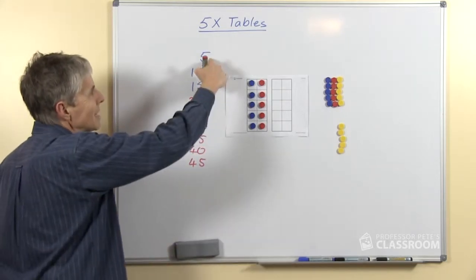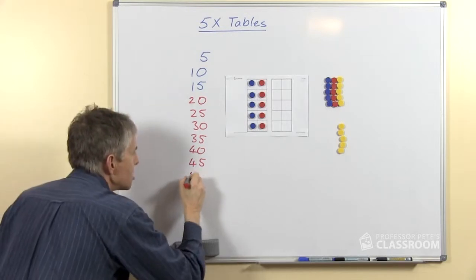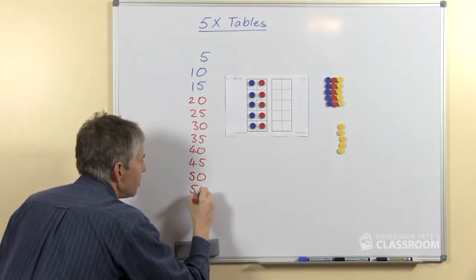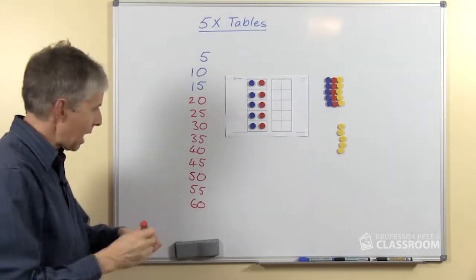You can see a pattern can't you? The number of 1's is going 5, 0, 5, 0, 5, 0 all the way. We can continue this 50, 55, 60 and so it would go on and on if we kept on adding 5.